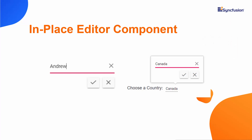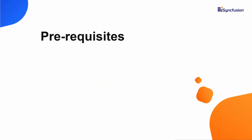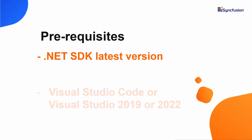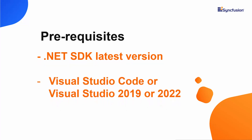Now, let's add the Syncfusion Blazor editor to a Blazor WebAssembly app using Visual Studio 2019. In this tutorial, I am going to create a new Blazor app, but before I create one, I will make sure the latest version of the .NET Core SDK is installed in my machine. I should also have Visual Studio Code, Visual Studio 2019, or Visual Studio 2022 installed. With that confirmed, let's start building the app.